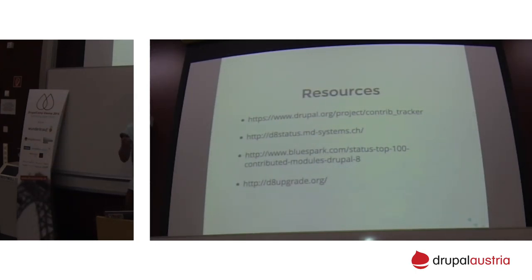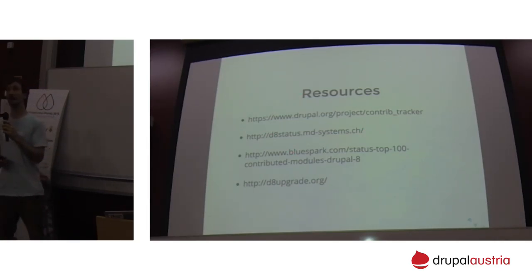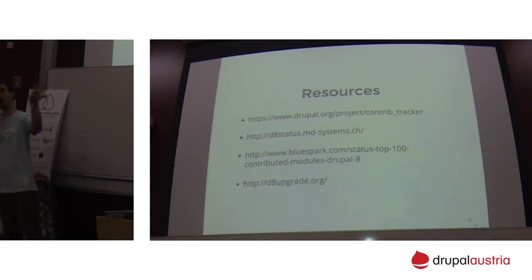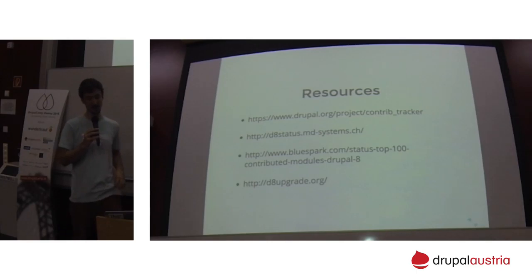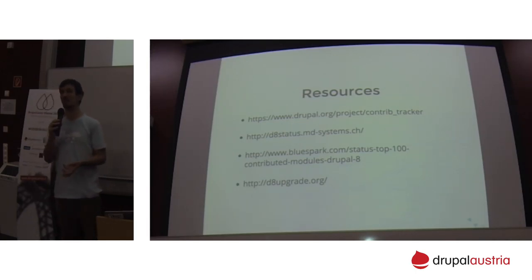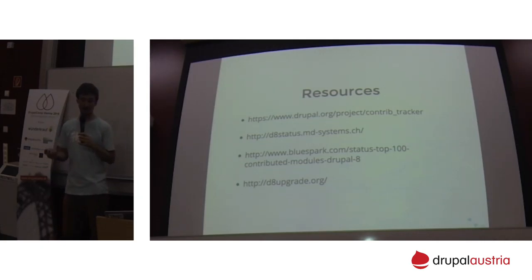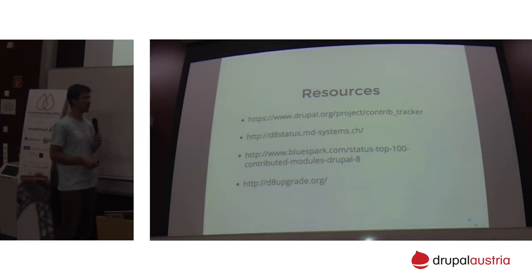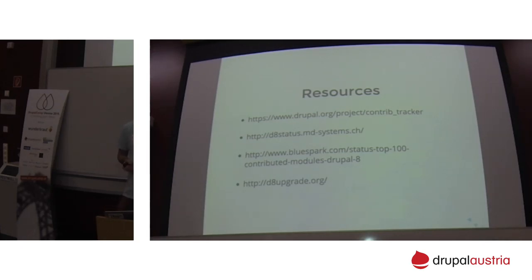A colleague mentioned a module called content tracker. Go check it out - it's based on different issues with statuses to provide a board where you can see what state modules are in. There's also a Switzerland-based resource that has been heavily working on contrib modules and has a status overview focused primarily on test coverage. There's also a website about the top 100 contributed modules listing with their latest release status. The Drupal 8 upgrade service is available - you put the URL of your existing Drupal 7 site and it tells you which modules are already ready and which ones you'll have to wait for.